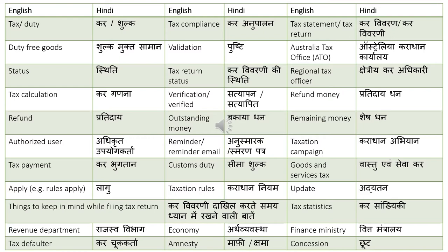Validation: 'pushti'. Tax return status: 'kar vivarani ki sthiti'. Verification or verified can be translated as 'satyapan' or 'satyapit'. Outstanding money: 'bakkaya dhan'. Reminder or a reminder email can be translated as 'anusmarak' or 'smaran patr'.